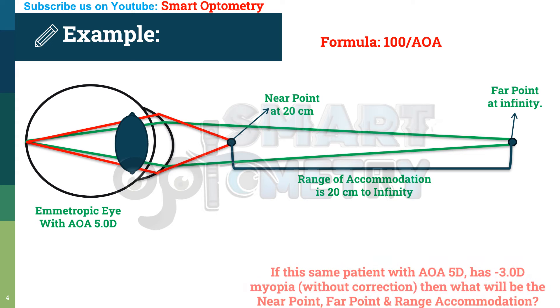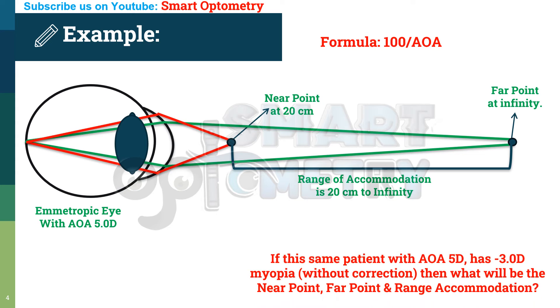Now, if this same patient with an amplitude of accommodation of 5 diopters has 3 diopters of myopia, what will be the near point, far point, and range of accommodation? Let's see in the next slide.